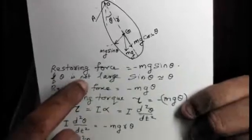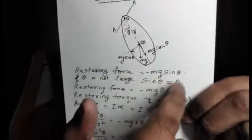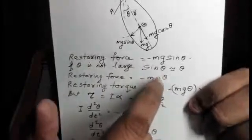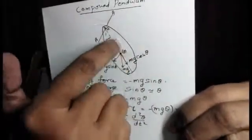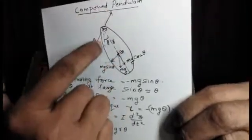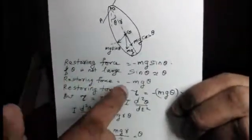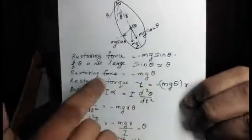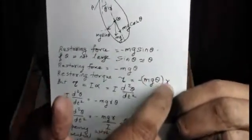If theta is sufficiently small, when theta is very small, the restoring force equals minus Mg theta. In general, restoring torque equals force into perpendicular distance from the axis of rotation or axis of oscillations. Then restoring force equals minus Mg theta.